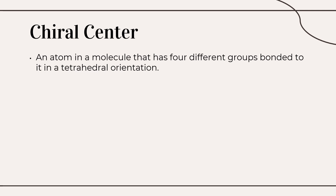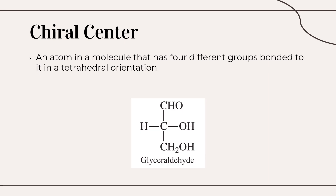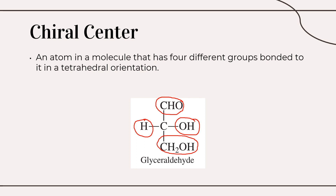What is a chiral center? An atom in a molecule that has four different groups bonded to it in a tetrahedral orientation is a chiral center. Let us look at the simplest carbohydrate as an example: glyceraldehyde. This molecule has four groups bonded to the central carbon atom — CHO, hydrogen, the OH or hydroxyl group, and CH2OH. These four different groups make glyceraldehyde a chiral molecule. Any molecule containing a chiral center or chiral carbon is a chiral molecule and will exist as a pair of enantiomers.